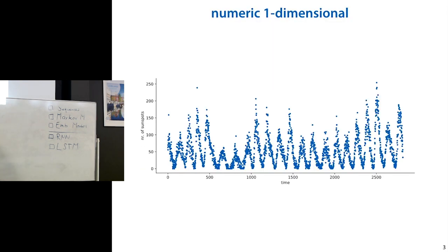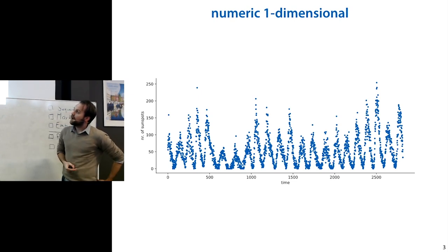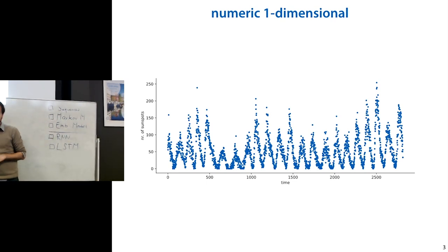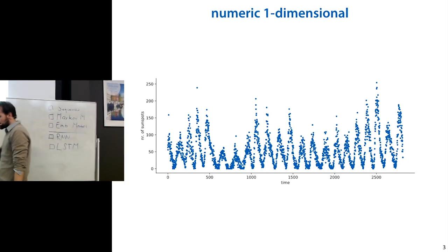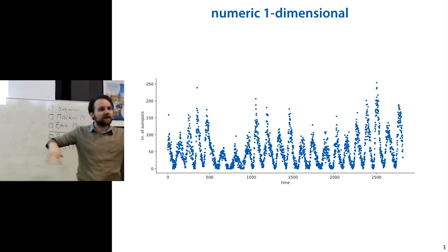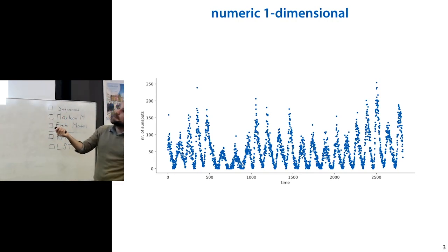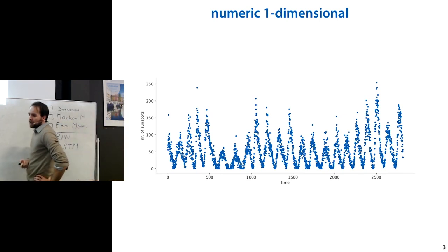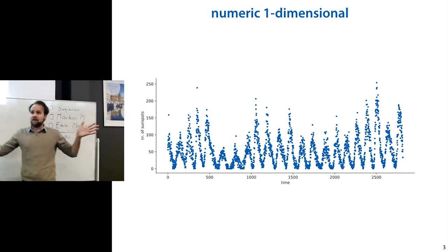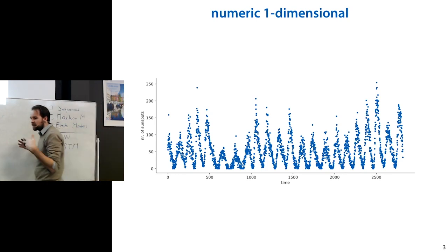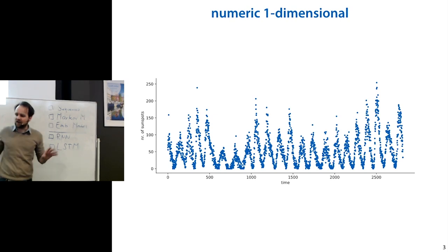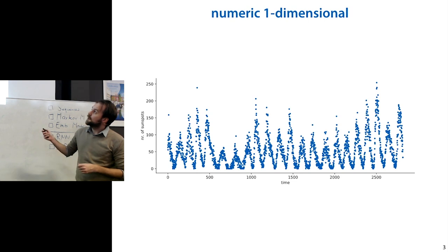Let's dig right in. First: what kind of sequences can we expect in the wild? There are a couple of different categories, and depending on which category you're in, you need different approaches. The simplest is the one-dimensional time series — basically a sequence of numbers. For instance, a price index over time, traffic flow over time, or the number of sunspots observed over time. It's fairly straightforward: just a big sequence of numbers, each one time-stamped.